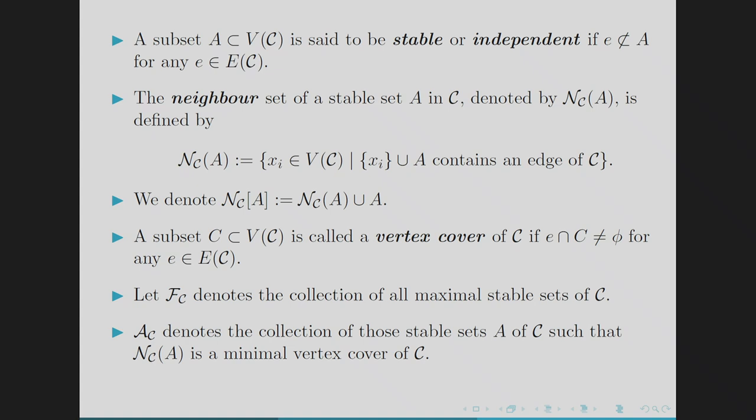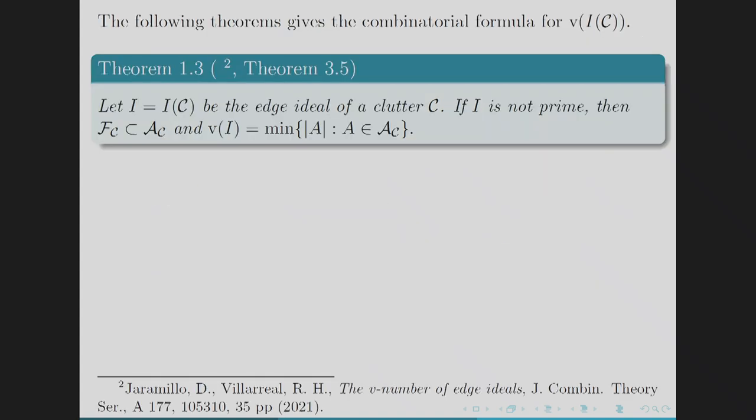A(C) denotes the collection of those independent sets whose neighbor is a minimal vertex cover. Zaramillo and Villarreal gave the combinatorial description of the V number for square-free monomial ideals: if I = I(C) is the edge ideal of a clutter and I is not prime, then F(C) is contained in A(C) and the V number is the minimum cardinality of A such that A belongs to A(C).